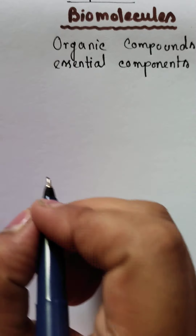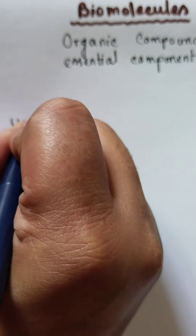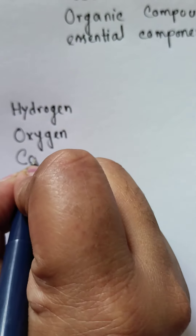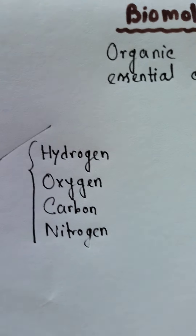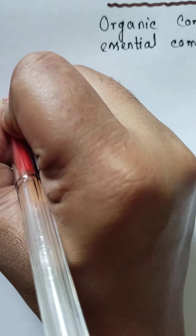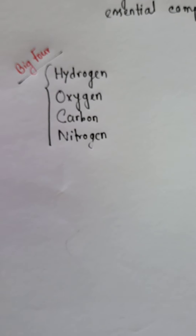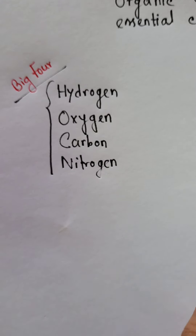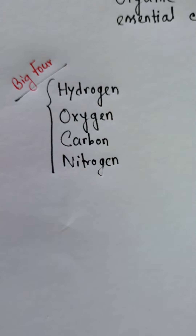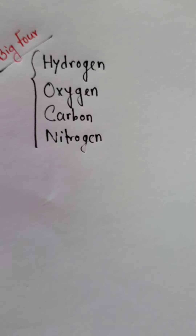How do we know there are biomolecules inside our body? There are hydrogen, oxygen, carbon, and nitrogen — these are called the Big Four, because the body of each and every living organism is made up mainly of these four components. That's why they are called the Big Four.